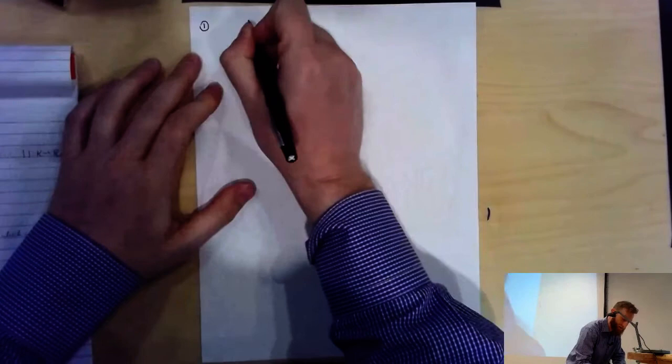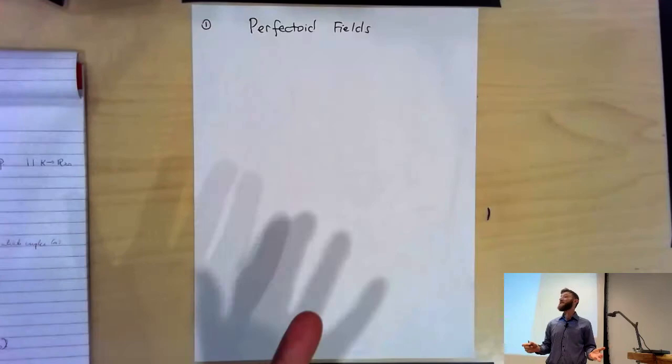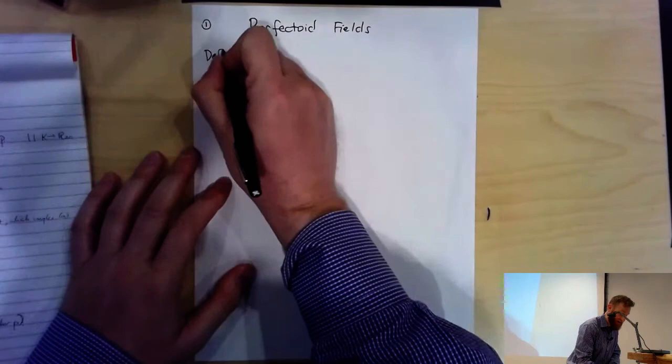So why do we have to know about perfectoid fields? Well, they're perfectoid spaces with one point. We'd better understand the case of one point. So, definition — let's start right away.